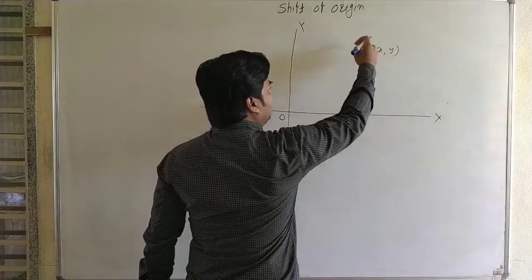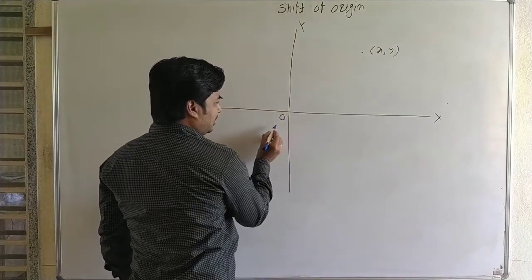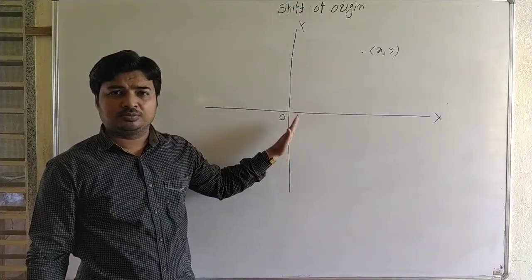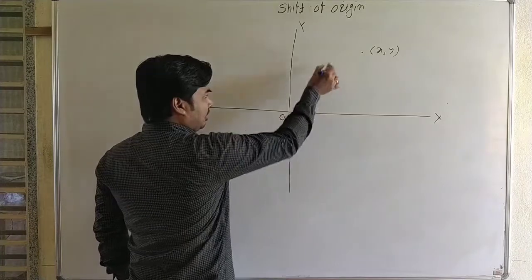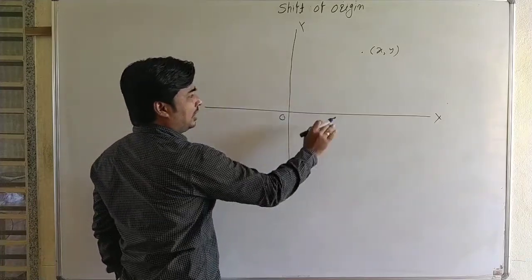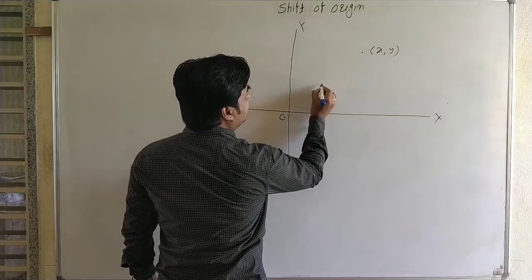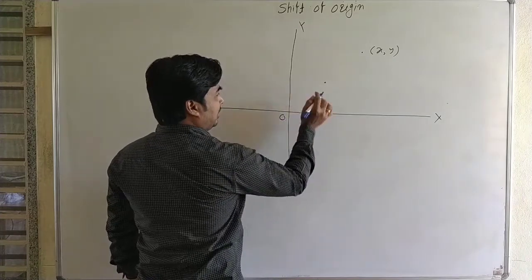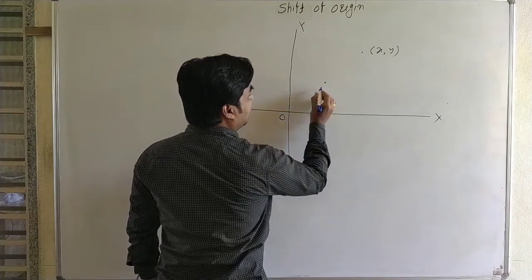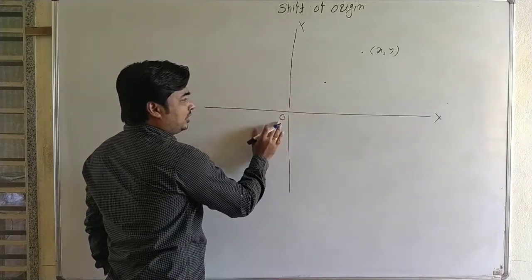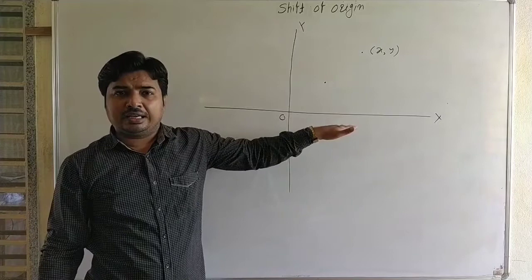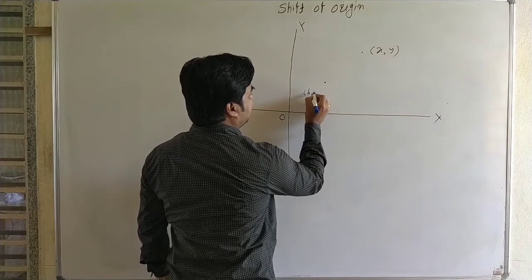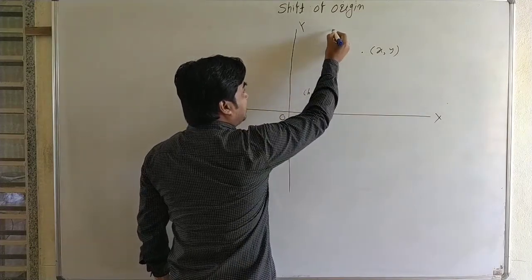The origin is at zero comma zero. Now we shift this origin to another point. There are infinite points in the plane and we can shift the origin to any of them. The shifted origin is called O-dash. Now the new origin O-dash is at the point of intersection of the new coordinate axes. Suppose this point is h comma k.